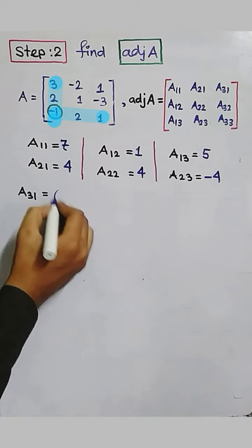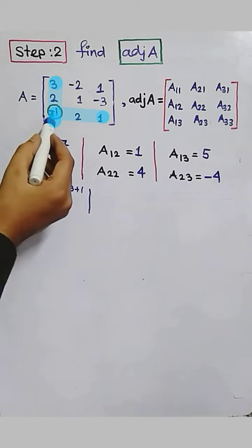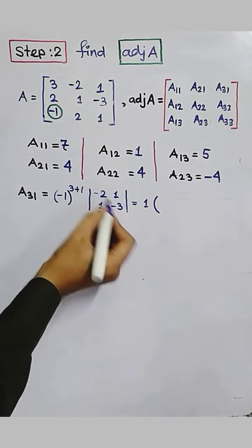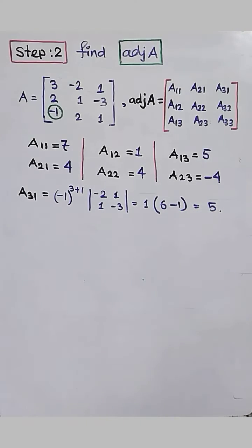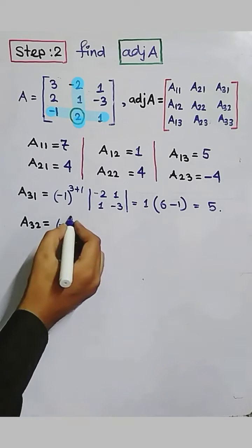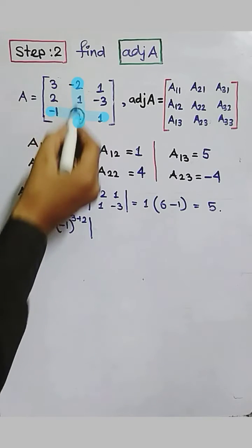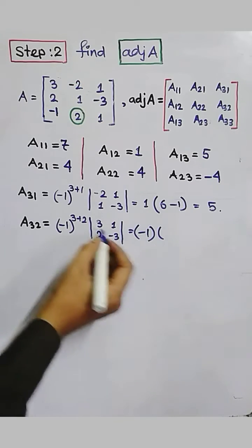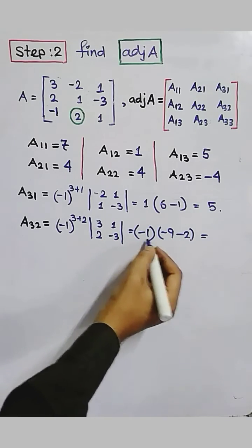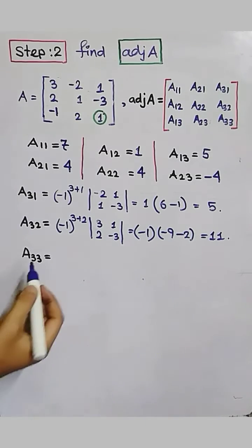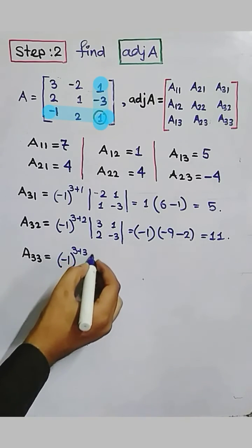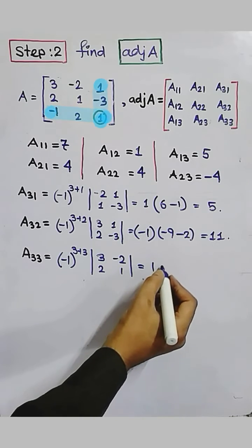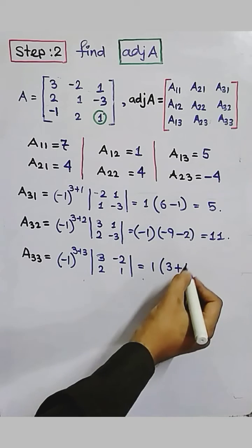A31 is the cofactor of minus 1: minus 1 to the power 3 plus 1, determinant [minus 2, 1; 1, minus 3]. Minus 1 to the power 4 equals 1, and the determinant gives 6 minus 1 equals 5. So A31 equals 5. A32 is the cofactor of 2: minus 1 to the power 3 plus 2, determinant [3, 2; 1, minus 3]. Minus 1 to the power 5 equals minus 1, into (minus 9 minus 2) equals minus 1 times minus 11 equals plus 11. So A32 equals 11. A33 is the cofactor of 1: minus 1 to the power 3 plus 3, determinant [3, minus 2; 2, 1]. Minus 1 to the power 6 equals 1, and 3 times 1 minus (minus 2 times 2) equals 3 plus 4 equals 7. So A33 equals 7.